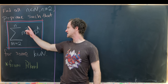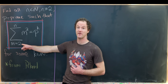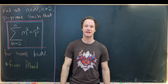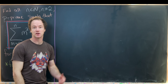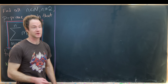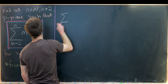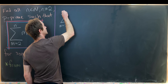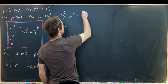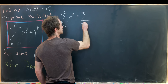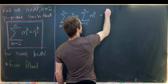We notice that this is the sum of the first n natural numbers squared, except for the first one — we're starting at 2. So we can calculate a closed form using the closed form for the sum of the first n squares. The sum as m goes from 2 up to n of m squared is the same thing as the sum as m goes from 1 up to n of m squared, minus 1.